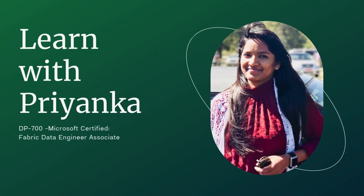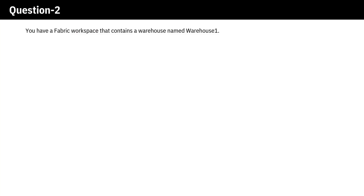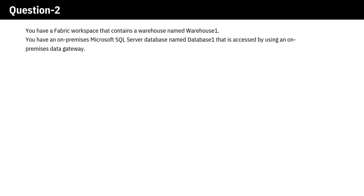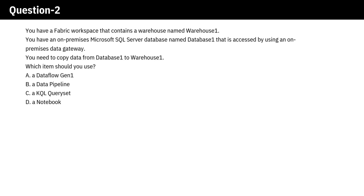Welcome to Learn with Priyanka. Question 2. You have a Fabric workspace that contains a warehouse named Warehouse 1. You have an on-premises Microsoft SQL Server database named Database 1 that is accessed by using an on-premises data gateway. You need to copy data from Database 1 to Warehouse 1. Which item should you use?